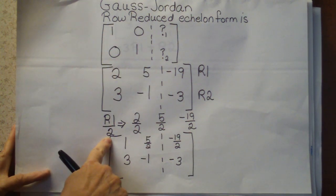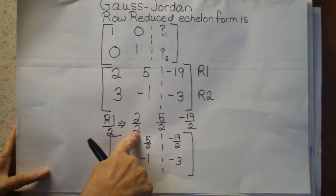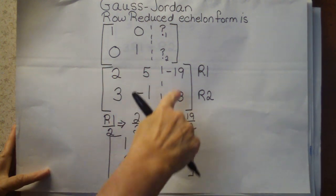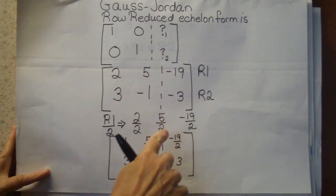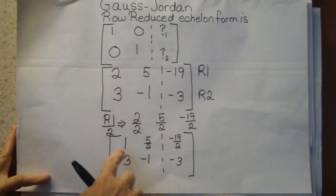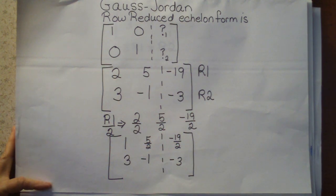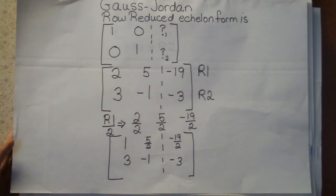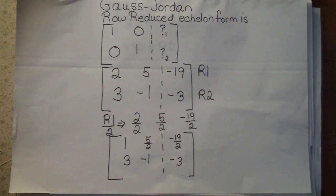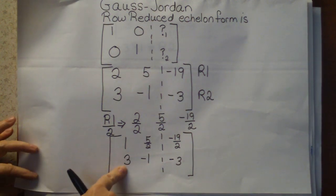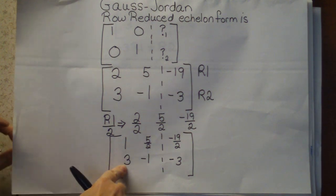Row 1 divided by 2 is 2 over 2, 5 over 2, and minus 19 over 2. Now at that point, I'm going to rewrite my matrix. So I have 1, 5 halves minus 19 over 2, and then 3 minus 1 minus 3. That didn't change. Alright, and so now our next step is to show how we're going to get the 0 where the 3 is now.